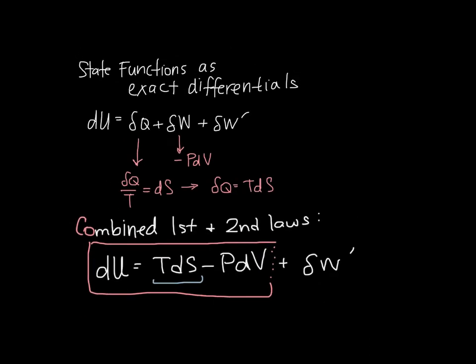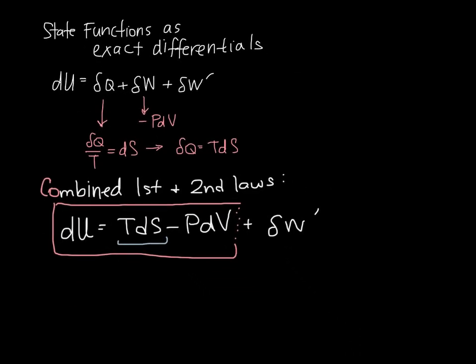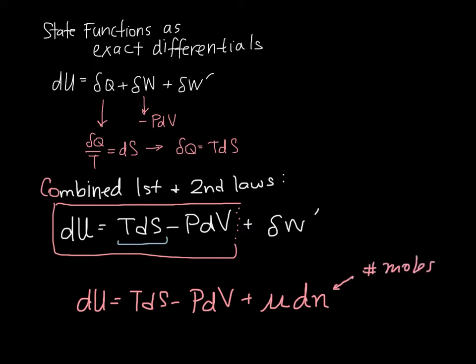We're going to sort of look at an example with this later, and so one other work term that we can use, that I will add on here right now, is the chemical potential. And if you've heard of this before, great. If you haven't, don't worry about it. But you can think about it as being sort of the energy associated with adding more of a particular species into the system. And this is dN, where n is the number of moles. This is the number of moles, and this is the chemical potential.